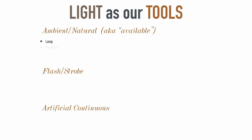Ambient lights are lamps, overheads, wall sconces, windows — we've got it everywhere. Track lighting, fluorescent all around this place. We can use these hot lights that are here. Gear, car headlights, reflective light. There's so much light. It is fun if we know what we're looking for.